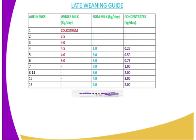On week one, feed the calf on colostrum. On weeks two and three, provide whole milk. On week five, provide whole milk, skimmed milk, and concentrate, with skimmed milk and concentrate introduced gradually. On week seven, you do away with whole milk and feed entirely on skimmed milk and concentrate. The concentrate reaches its maximum at week eight to week 16, at 2 kg per day, while skimmed milk is gradually reduced from 8 kg down to 4 kg.